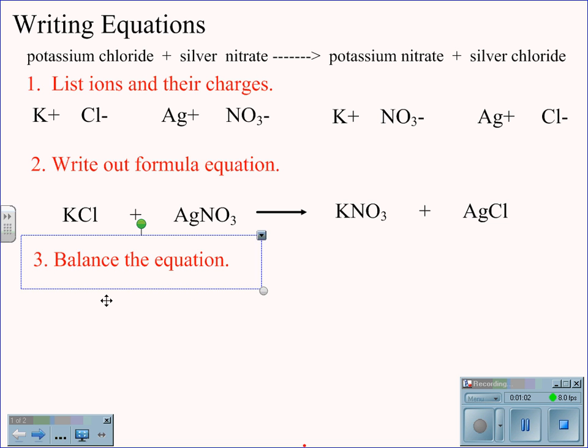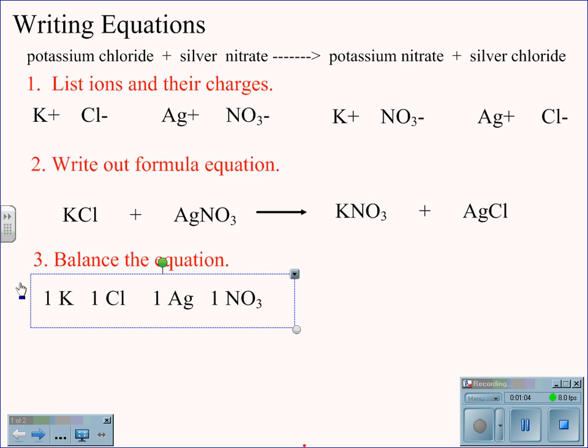Next, we will balance the equation. We count the atoms on the left or reactant side of the equation, and we find that we have one potassium, one chlorine, one silver, and one nitrate.